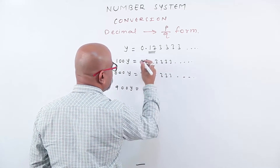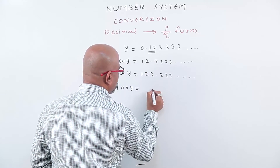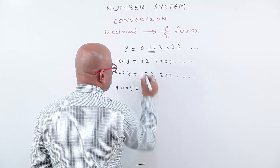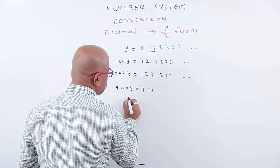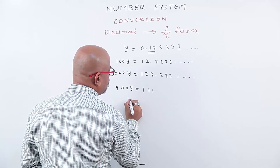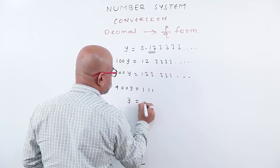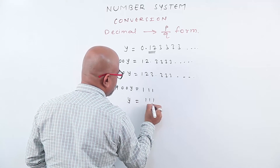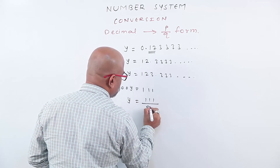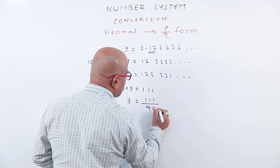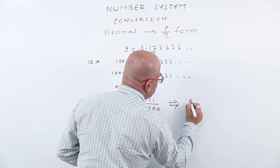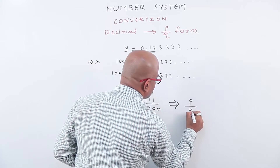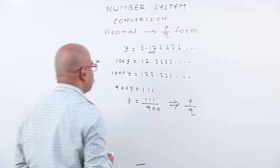Subtracting: 1000y minus 100y gives 900y equals to 123 minus 12, which is 111. So y equals to 111 upon 900. That is of the form p by q.